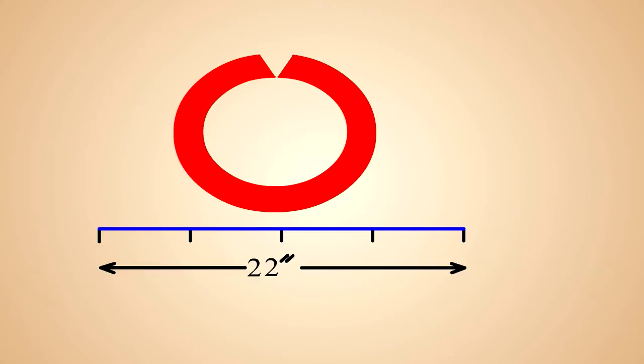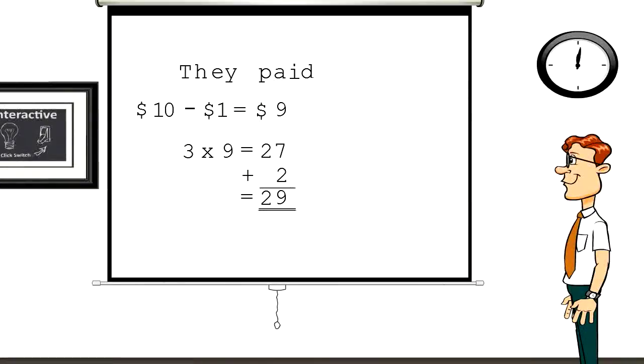Remember step one, the missing dollar. Three nines are 27 plus two equal 29. Where did the extra dollar go? Well, the answer is the three people gave the waitress $30 and the final bill was $25. Three times nine is 27 minus the two dollars the waitress kept equals 25, which is what they really paid.